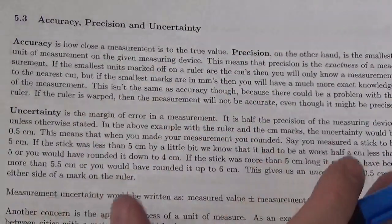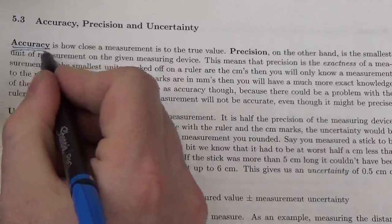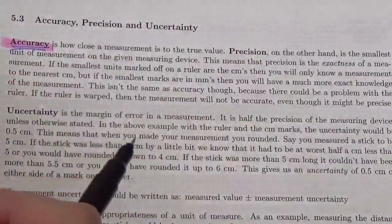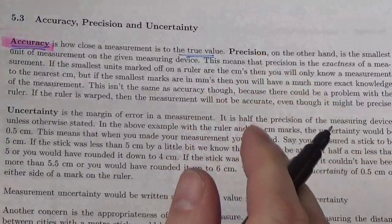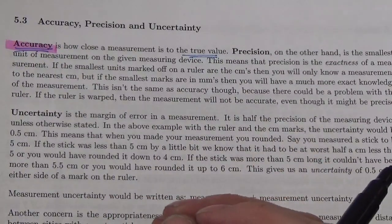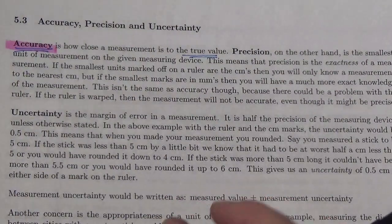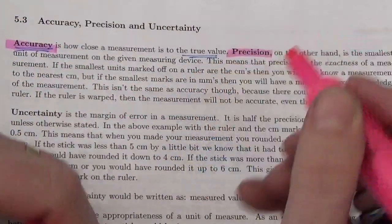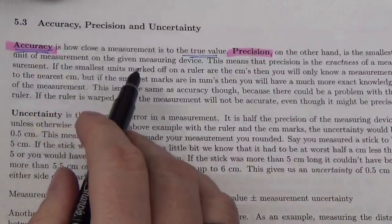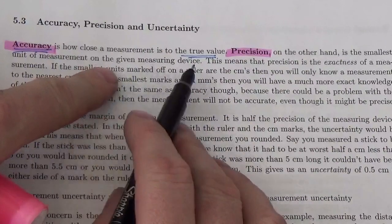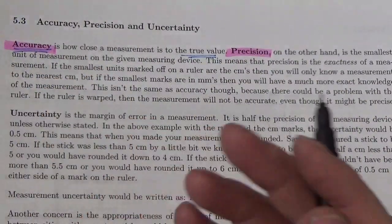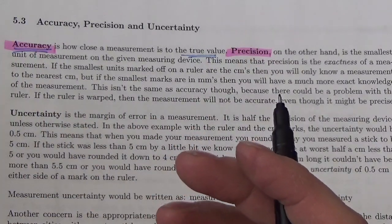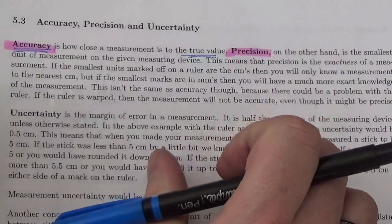There's a lot of writing here, so let me just walk you through what we're talking about. Accuracy is how close a measurement is to the true value. With accuracy, we're interested in whether or not we're getting a measurement that is correct. Precision, on the other hand, is the smallest unit of measurement on the given measuring device. So precision is about the device, while accuracy is about whether or not we're approaching the actual value of the object we're measuring.